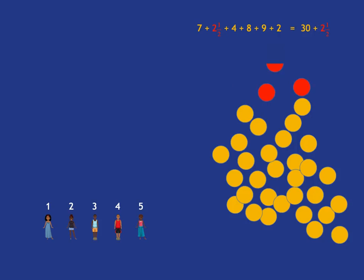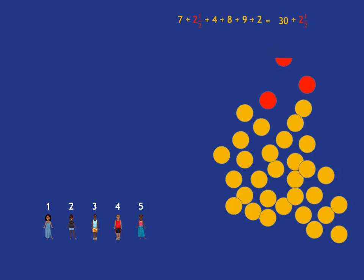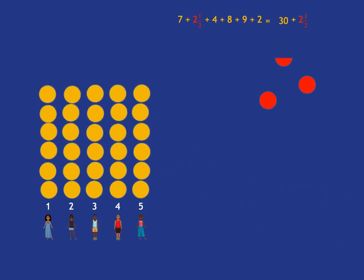Then when we work out the mean, we're going to again share fairly between all five people. So our yellow coins happen in the same way. Those two and a half extra coins also have to be shared between the five people.